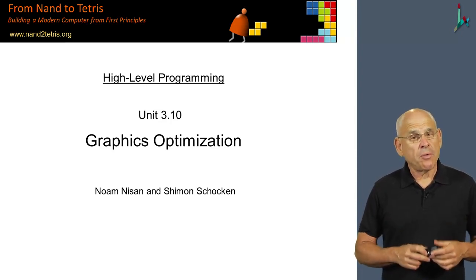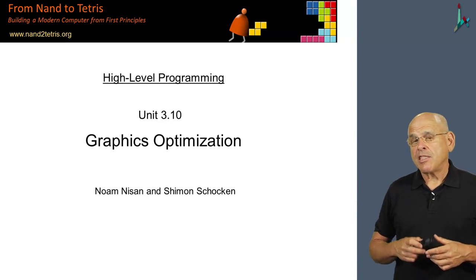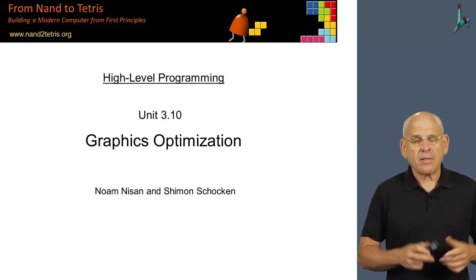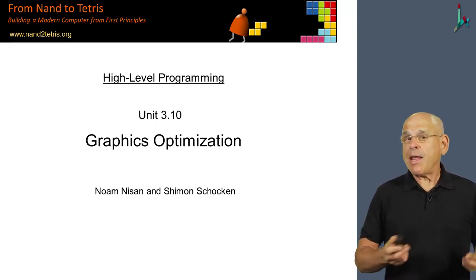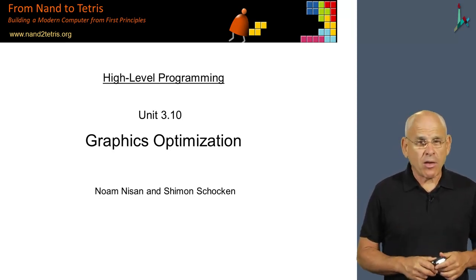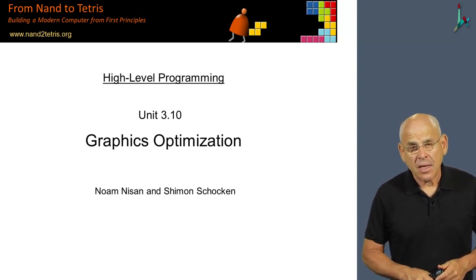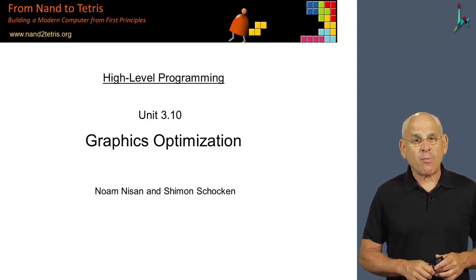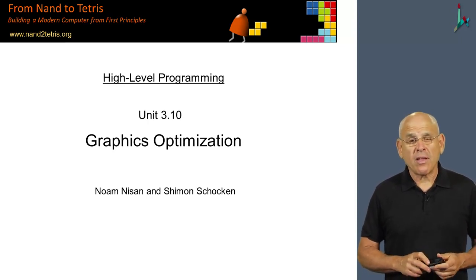In the previous unit, we showed you the square dance application, which involved a very simple graphics image, a square. In fact, we used the operating system to draw this square. In many applications, we have to use some more fancy graphics, some less regular polygons than squares and rectangles. So what do you do when you have to create high performance graphics? Well, you can do some tricks that we're going to unfold in this unit.